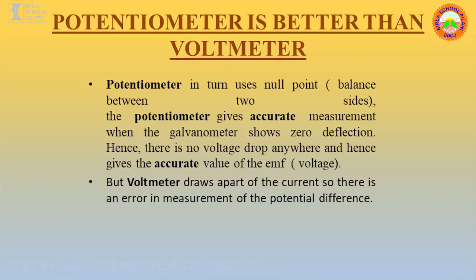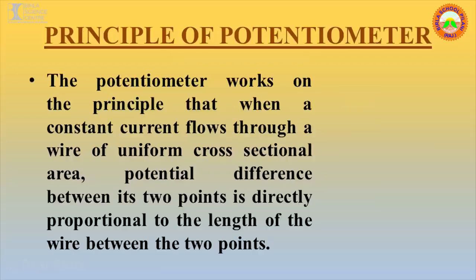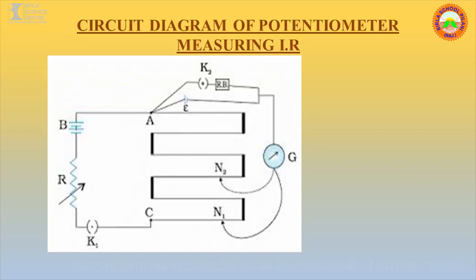The potentiometer is considered better than a voltmeter because it draws no current when connected in the circuit, whereas a voltmeter draws a certain amount of current for deflection and is therefore not accurate. The potentiometer works on the principle that when a constant current flows through a wire of uniform cross-sectional area, the potential difference between two points is directly proportional to the length of the wire between those points.